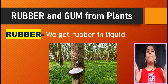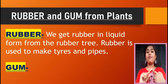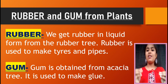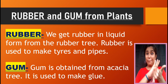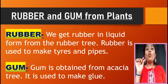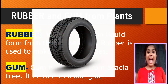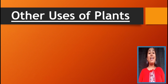Rubber and gum are also obtained from plants. We get rubber in liquid form from the rubber tree — rubber is used to make tires and pipes, and also the erasers we use. Gum is obtained from the acacia tree and is used to make glue — the sticky substance we use to paste pictures in our projects.